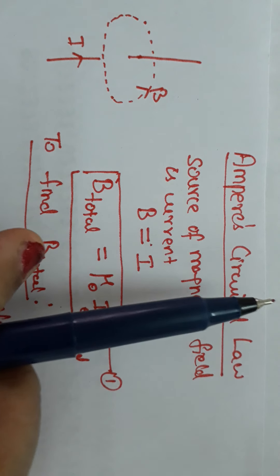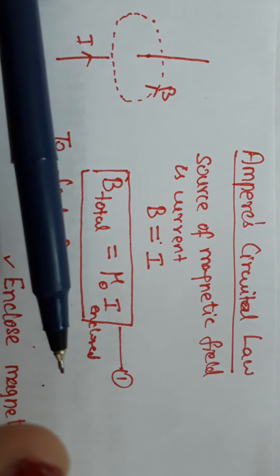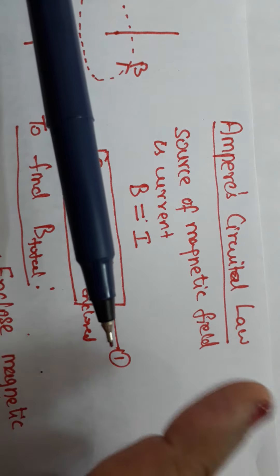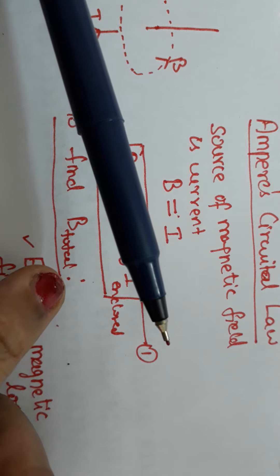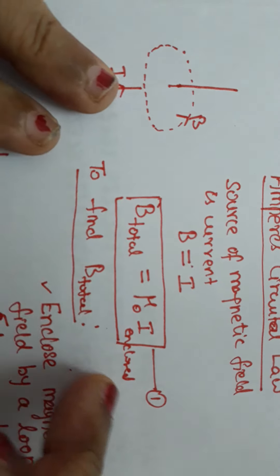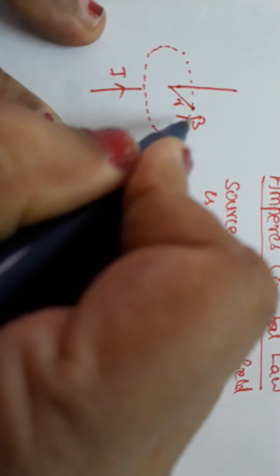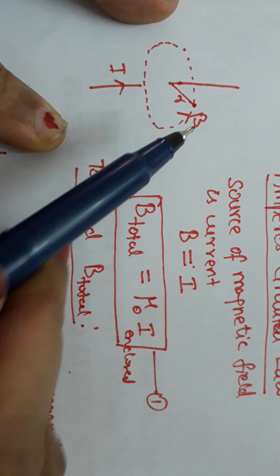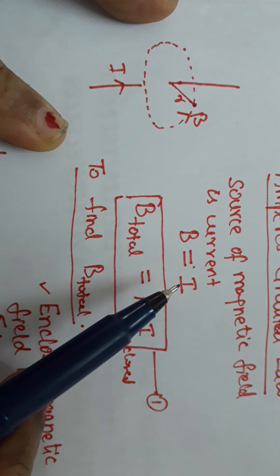Once the magnetic field comes out of the conductor, it will spread into the medium. In this medium, you consider a distance R from the wire and calculate the magnetic field at that distance. We can understand that this magnetic field does not depend on the current value alone.